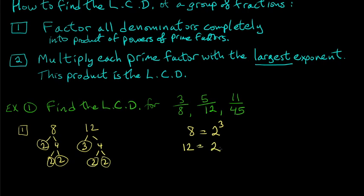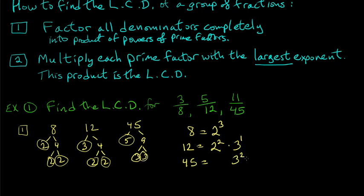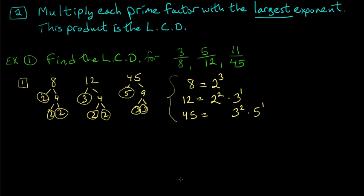For 12 we have 2 squared times 3 to the first. For 45, that's 5 times 9, and since 9 is 3 times 3, we get 3 squared times 5 to the first. So all three denominators are now factored into their powers of prime factors.